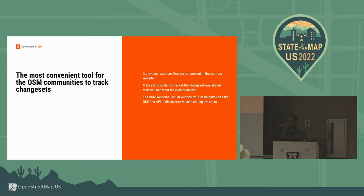I believe it is the most convenient tool for the OpenStreetMap communities to track changesets. We have a lot of resources that don't exist on the openstreetmap.org website. It also makes it possible to check if a changeset has already been reviewed. When you are viewing a changeset, you can mark it as good or not good, and other users can see that information.